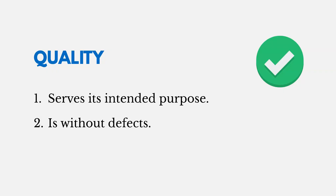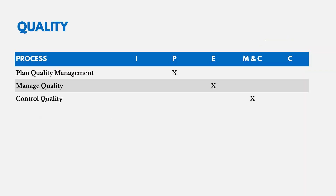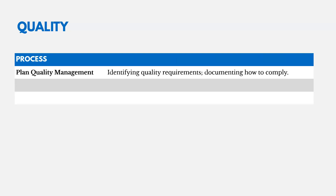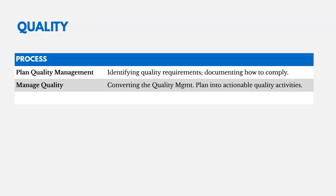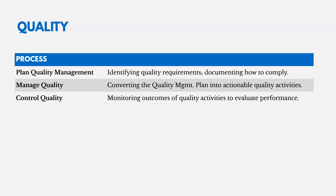Quality is defined as something serving its intended purpose and being free of defects. Quality management has three processes: one in planning, one in executing, and one in monitoring and controlling. We plan quality management by identifying quality requirements and documenting how to comply with them. We manage quality by converting the quality management plan into actionable quality activities. And we control quality by monitoring outcomes and deliverables to see if we're achieving the appropriate levels of quality.